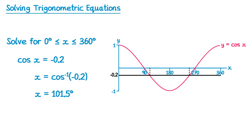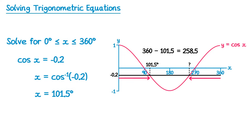One of those intersections we already have at 101.5 — that must be the left one — and we need to find the other one on the right-hand side. Using the same symmetry property of the cos graph, the horizontal distance from 0 to our solution is 101.5, which must be the same distance from 360 back to our second solution. So we do 360 take away 101.5, and we get the other solution, 258.5. So we have two solutions: 101.5 and 258.5.